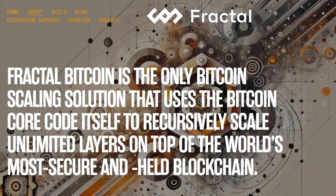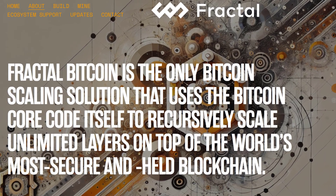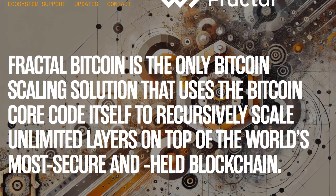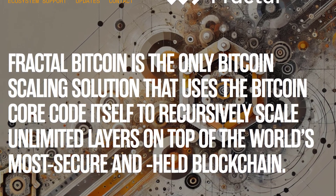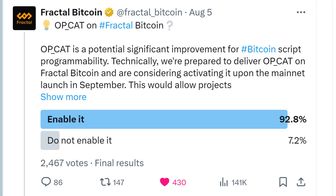According to the official Fractal Bitcoin website, they describe themselves as the only Bitcoin scaling solution that uses the Bitcoin core code itself to recursively scale unlimited layers on top of the world's most secure blockchain. Fractal Bitcoin gradually turns into a scalable computing system while remaining consistent with Bitcoin's main chain, using the same Bitcoin core code, proof-of-work consensus algorithm, and SHA-256. Fractal Bitcoin will be cheaper, faster, scalable, and more programmable due to the activation of OpCat.